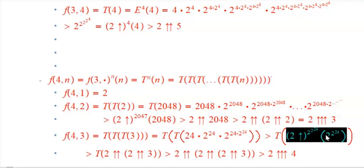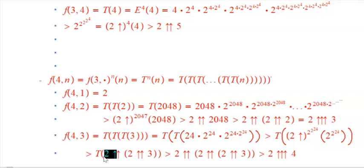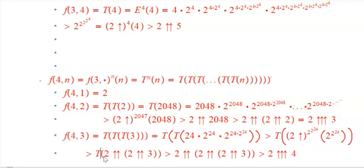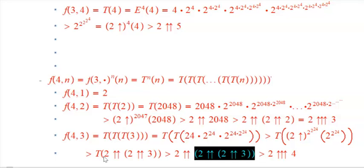And then I still have to do the tetration-level f function on that one more time. So that's bigger than 2 T applied to 2 double-up 2 double-up 3 — and that's a vast underestimate, but I'm just trying to get the pattern here. T is roughly a 2 double-up something. So now I'm taking 2 double-up 3, which is not a scary big number.